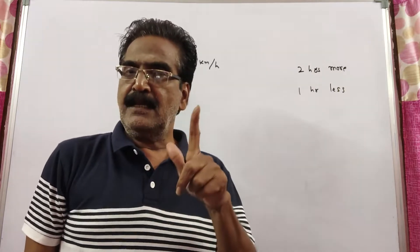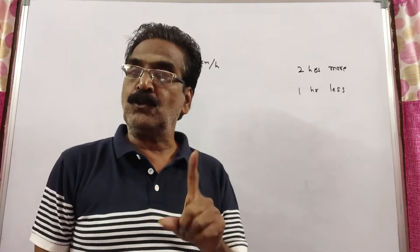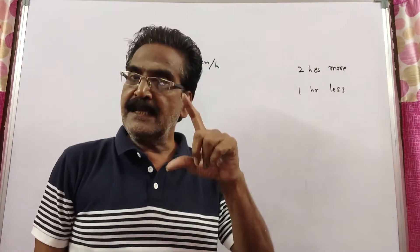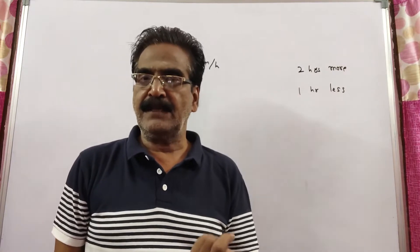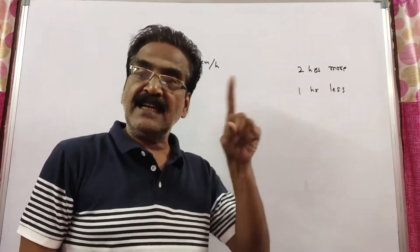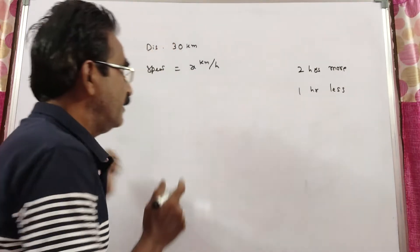See friends, in covering a distance of 30 kilometers, Arun takes 2 hours more than Anil. But if he doubles his speed, he takes 1 hour less than Anil. Then what is the speed of Arun?